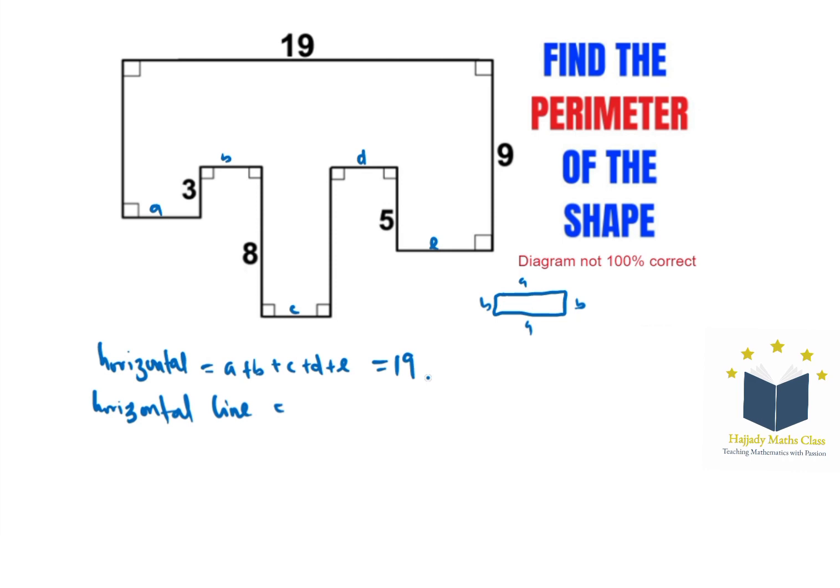For my horizontal line, I have it to be 2 times 19, that is 19 appearing twice, which is 38 units. Now we need to focus on the vertical line.